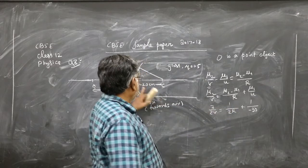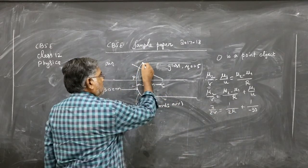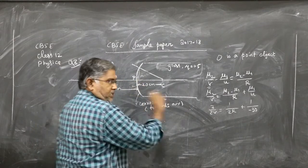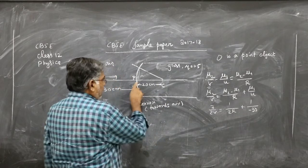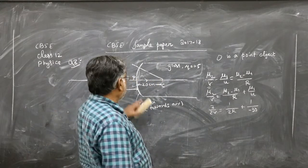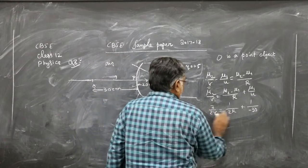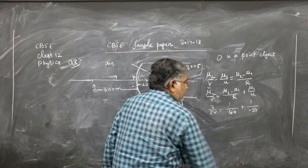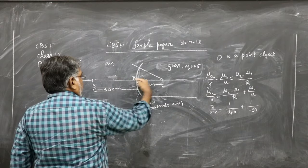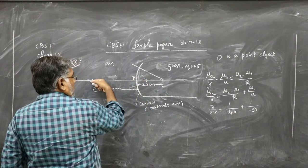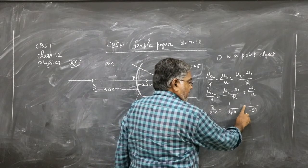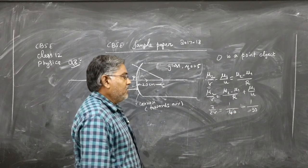R is given as 20 cm and it is positive because the center of curvature is in the direction of the incident ray — measuring from the pole, we go in the same direction as the incident ray, so R = +20 cm. The object distance u = −30 cm because measuring from the pole to the object goes opposite to the direction of the incident ray.